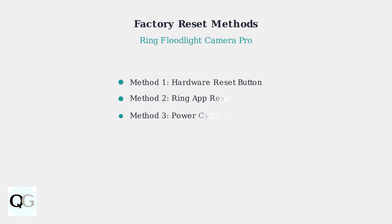There are three reliable methods to factory reset your Ring Floodlight Camera Pro. Each method serves different troubleshooting scenarios and technical situations.